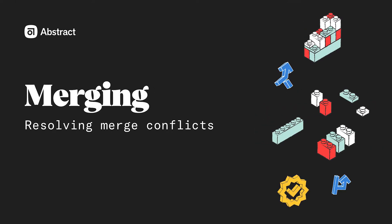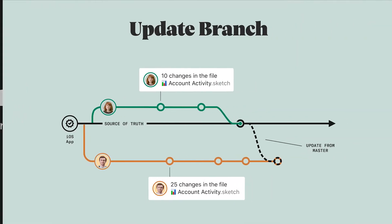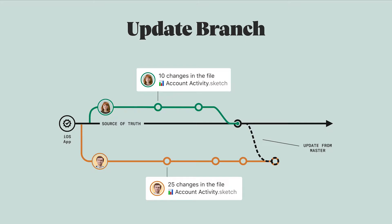As mentioned in the previous video about updating your branch, clicking the Update from Master button begins the process of comparing the files in your branch to the files in Master. Sometimes this process will not result in any conflicts, which means that the work you've done on your branch and the changes that happened in the Master files did not have any overlaps. When you do encounter a conflict, this usually means that your colleague updated some artboards in Master and you also updated those same artboards in your branch. Abstract surfaces these differences so that you can choose what changes to keep and what changes to discard in your branch.